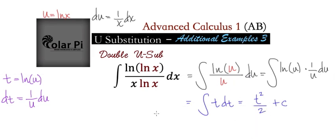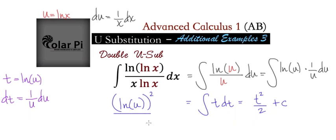And then we see that t is the natural log of u. So we can write our answer as the natural log of u squared divided by 2 plus c.